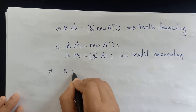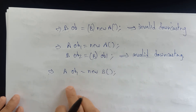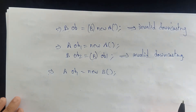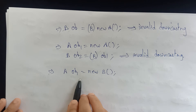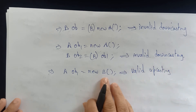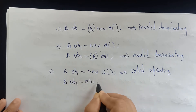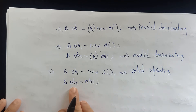Then let's take A OB1 equal to new B. An object is created in the subclass — this is valid upcasting, because super is inside the subclass. Whenever the superclass is there, the methods and variables that are there can be copied into the subclass. The superclass members will be copied into the subclass. So the object is created and OB1 — it's a valid upcasting. Now suppose B OB2 equals OB1 — OB1 is the reference of A superclass, assigning it to the reference of B — it's not possible. This is invalid downcasting.